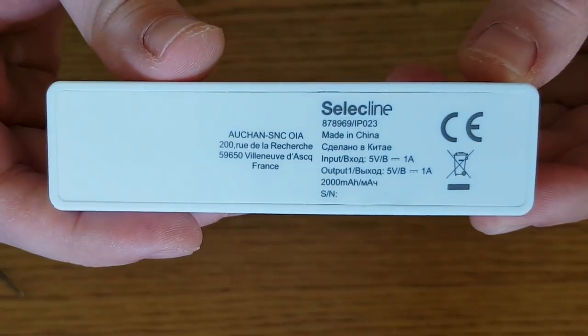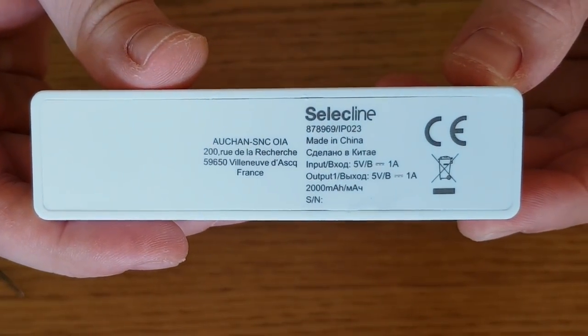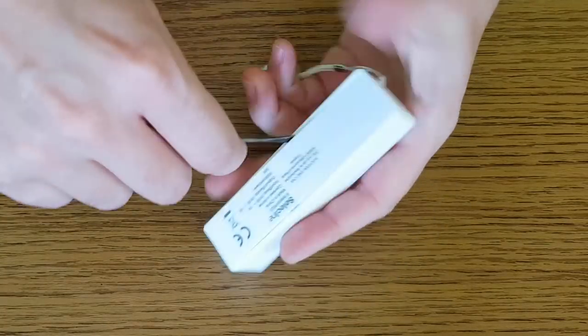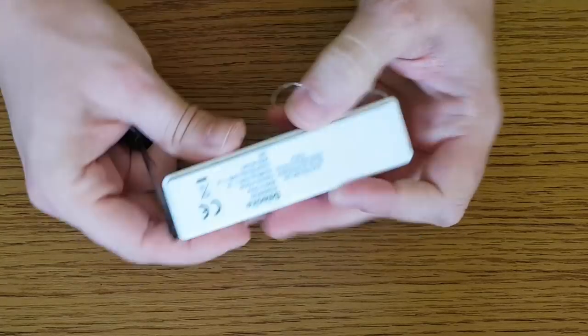Back to the cheap power bank. The battery apparently has a capacity of 2000 milliamps hour. I highly doubt that. Of course the next logical step is to take a look inside it.